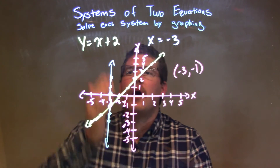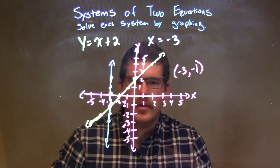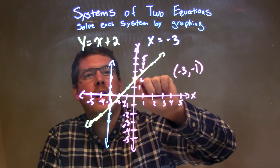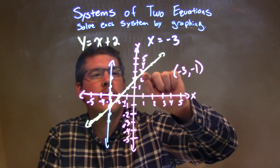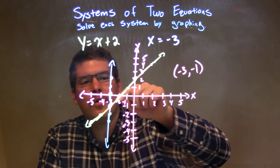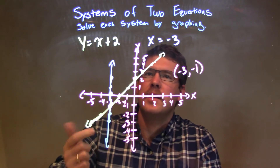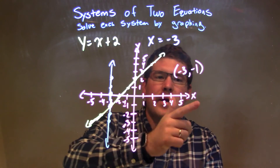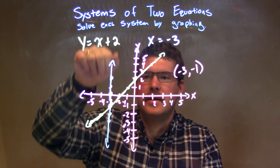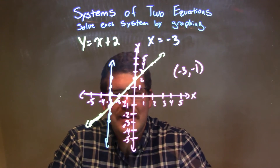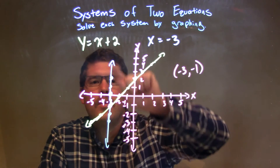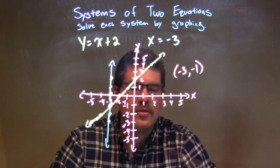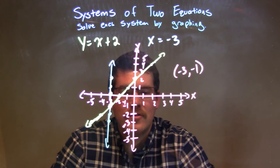Let's recap. We were given y equals x plus 2 and x equals negative 3, and we had to graph them. We graphed the first equation — the green one — with a y-intercept of 2 and a slope of 1, going up 1 over 1 and down 1 over 1. Then we graphed the blue equation, x equals negative 3, as a vertical line. All x values are negative 3, while y values can be anything. The two lines intersected at negative 3, negative 1, and that is the solution to our system of equations, solved by graphing.